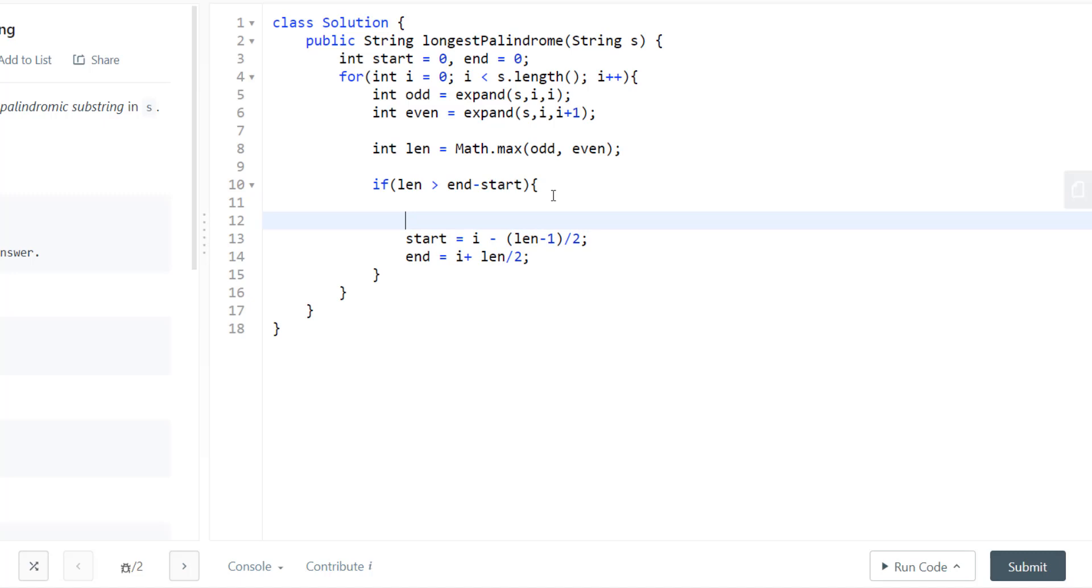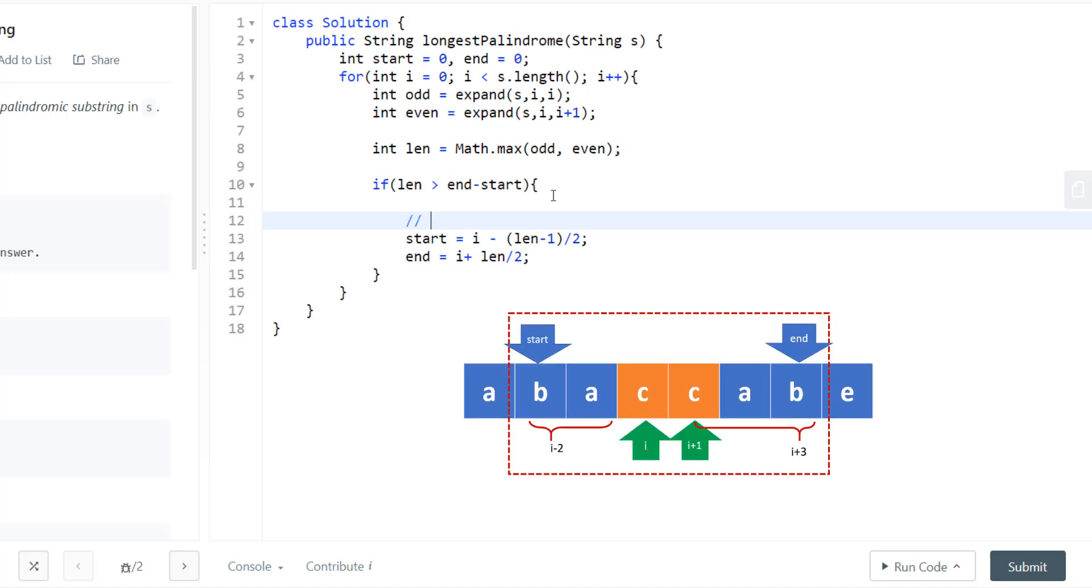Let me take an example. If we are having an even length, say 6, that is the length of our palindrome. Now, for this, my i would be at index 2, okay? And my start should have been at index i minus 2 and my end should have been at index i plus 3.